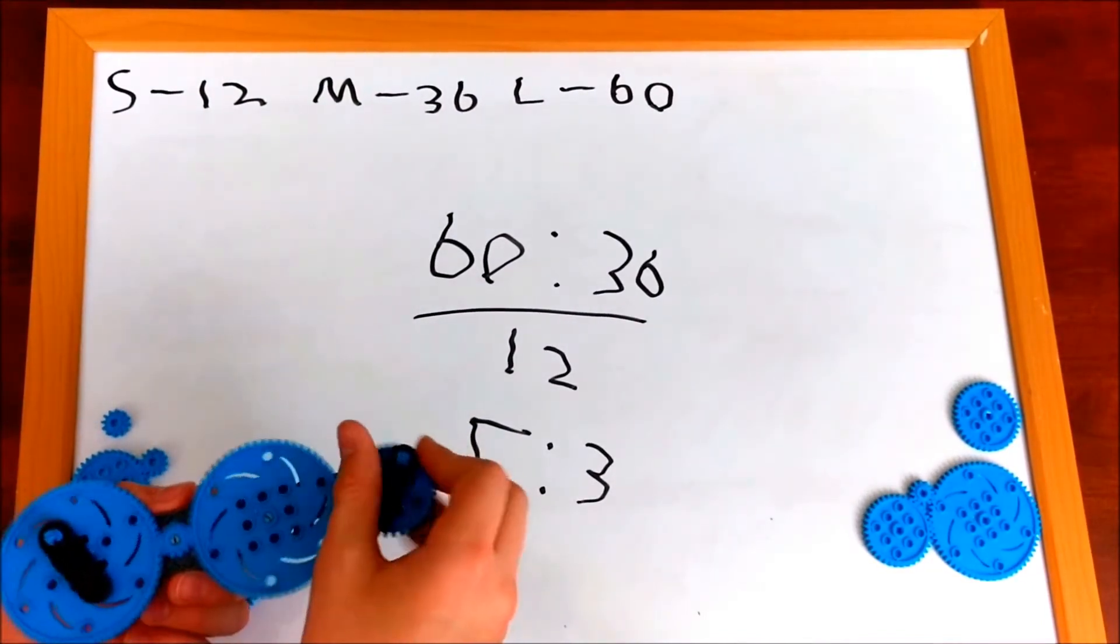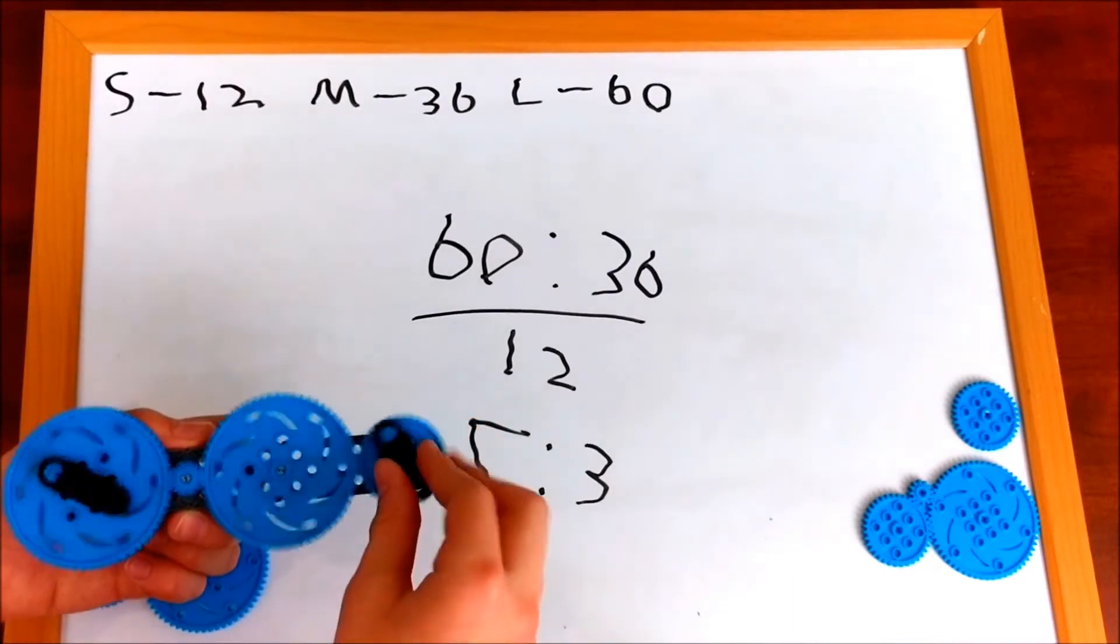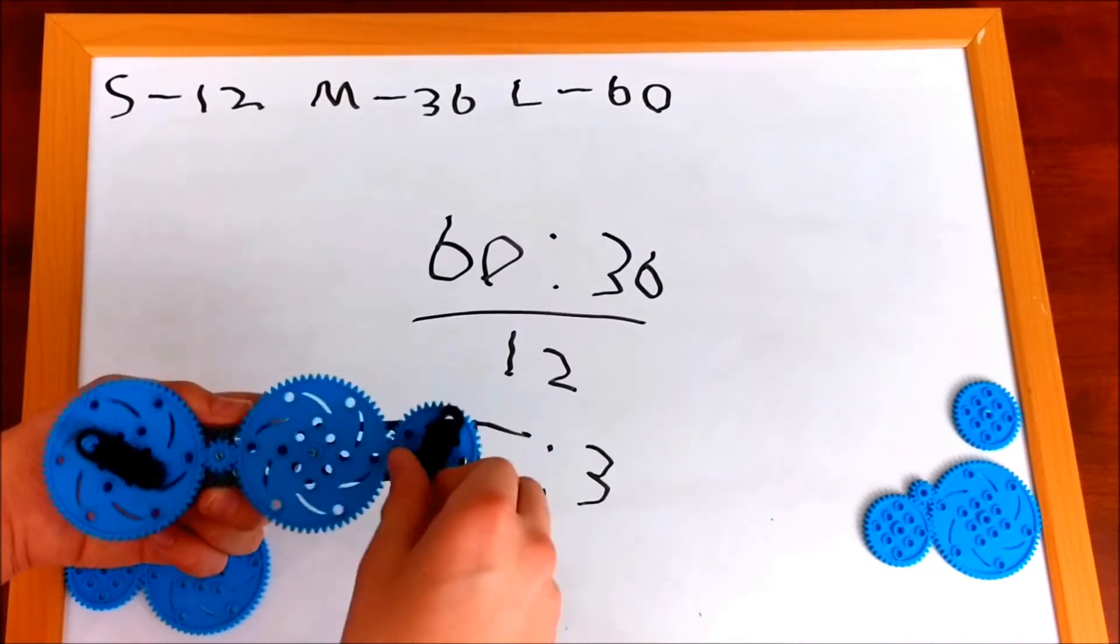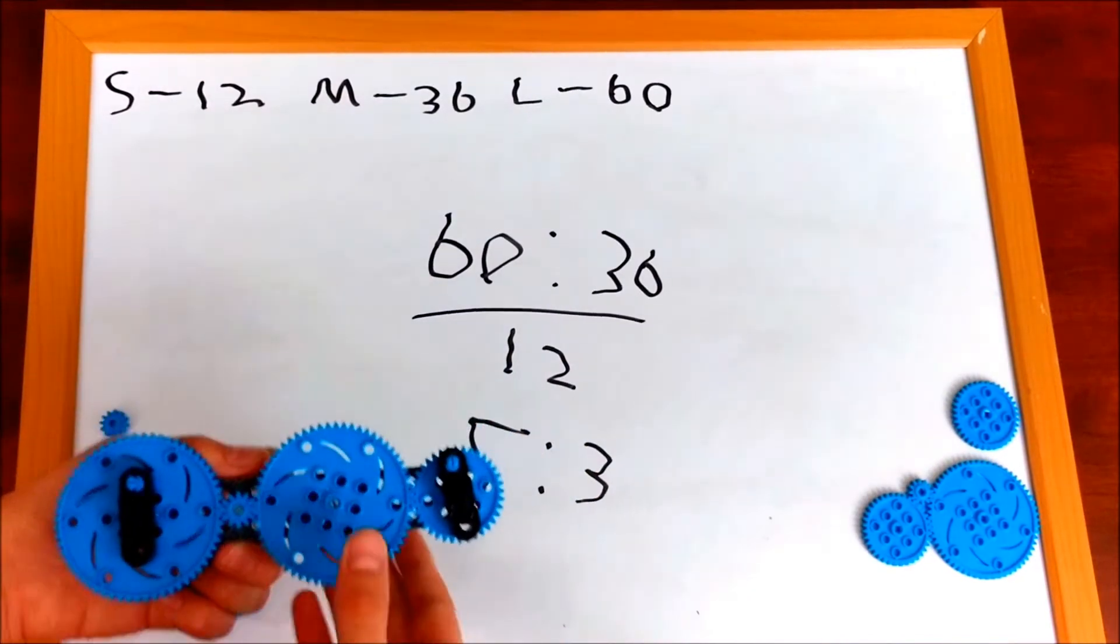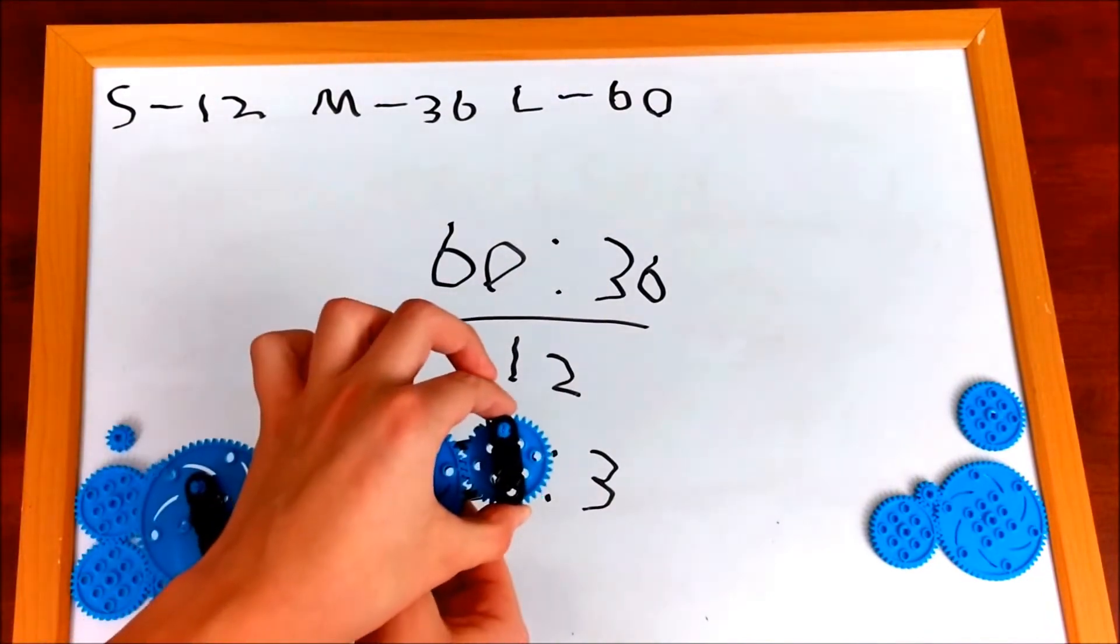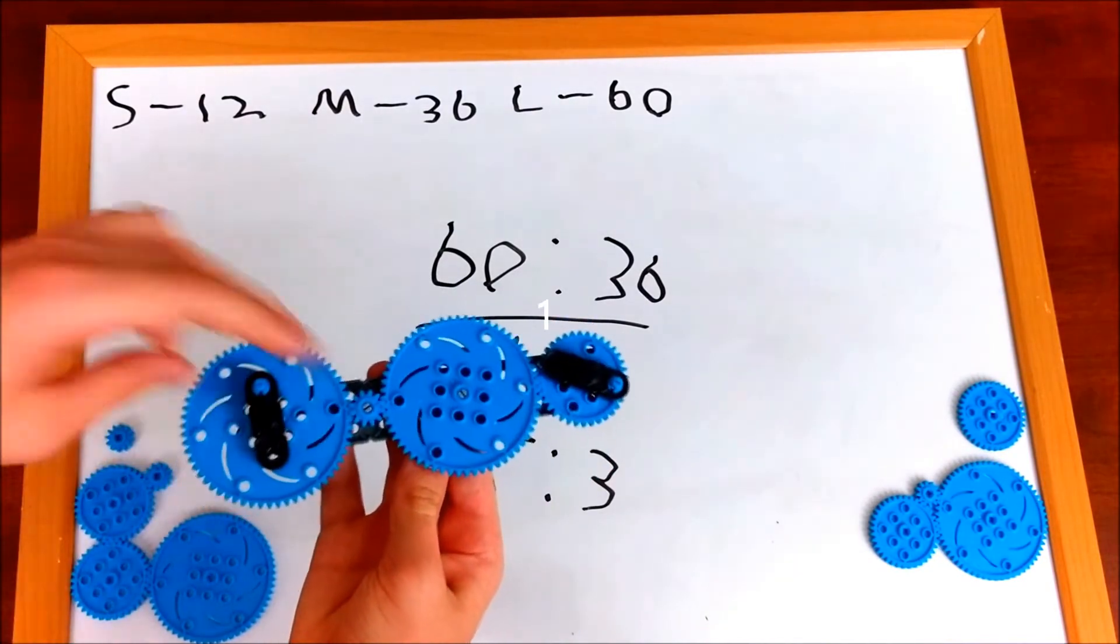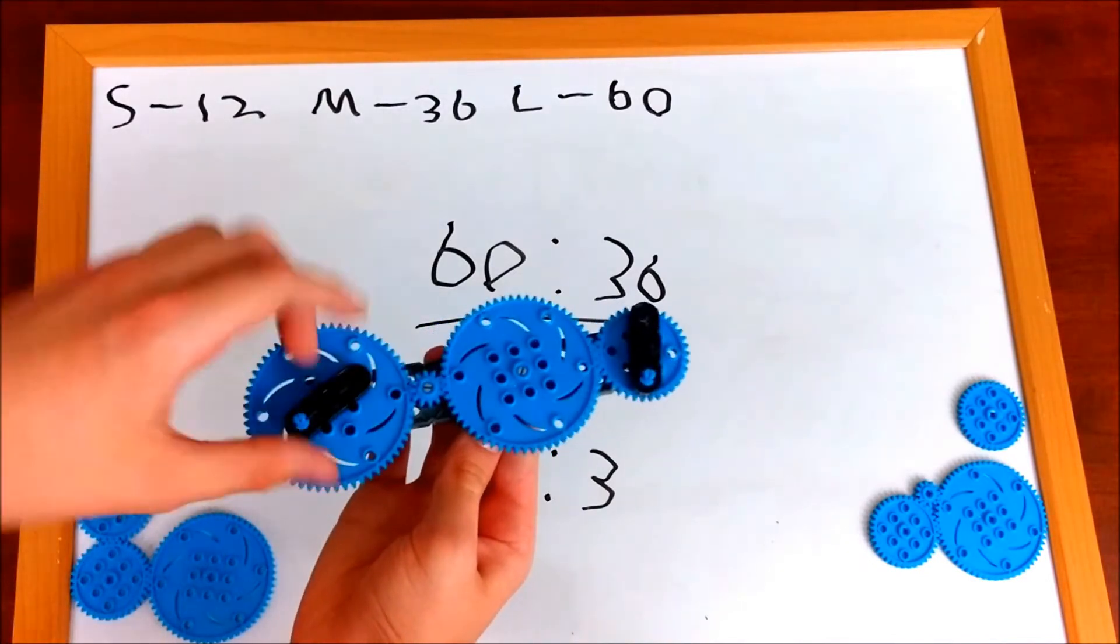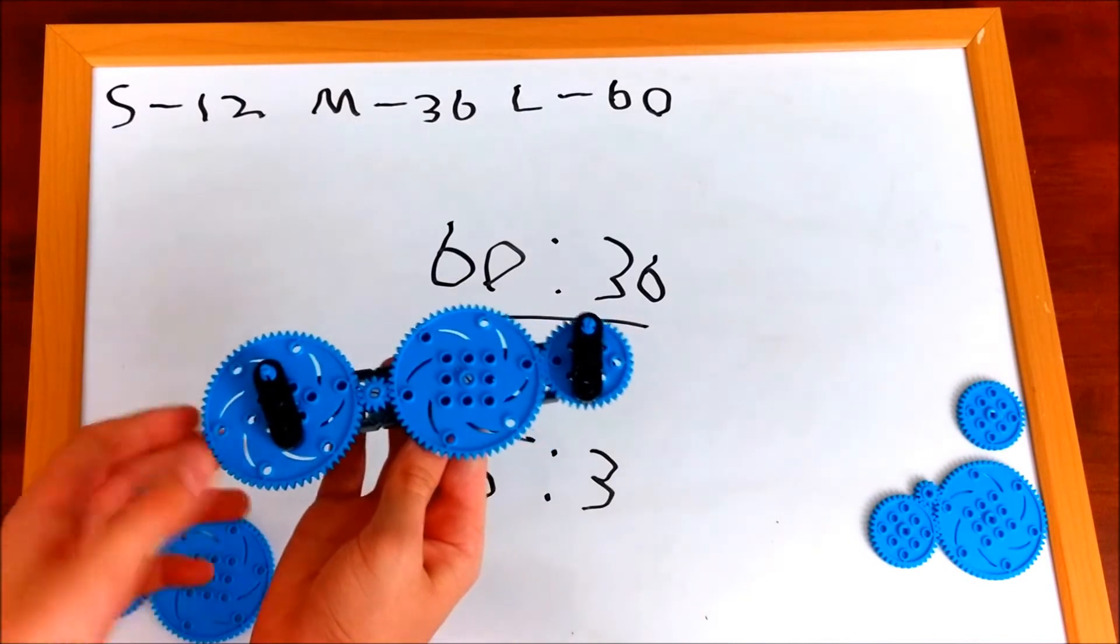So, what that means, is it would take 3 times, 1, 2, 3, 4, 5, for this one and this one to be the same, if you chose this gear to turn. Or, 1, 2, 3, for these two to get the same from this gear.